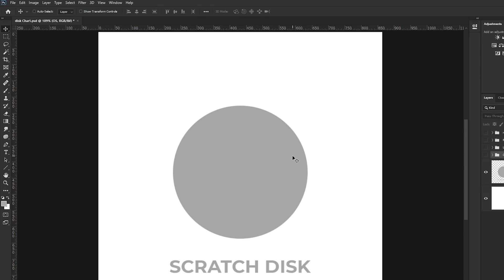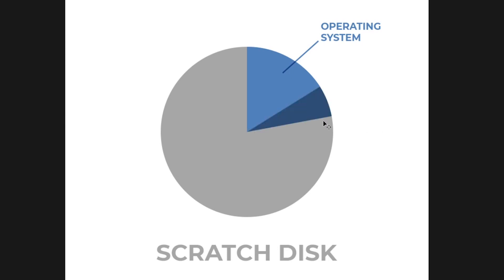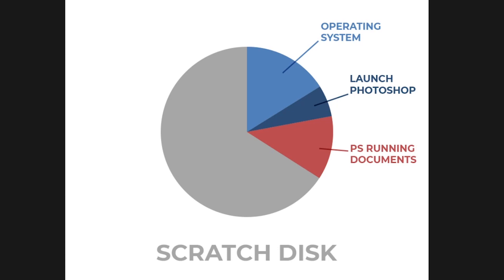Let me show you this chart here to explain what a scratch disk is and how it works. Let's suppose this is the primary drive where Photoshop is installed — we call it the scratch disk. When you install your operating system it takes some space in your hard drive or SSD. Then once you launch Photoshop, it takes up this much space — even before you've opened any document. Once you create a new document or open an existing PSD file, that takes away this much more space, which we call the Photoshop running documents. So you can see this much space has already been taken in the hard drive even before editing any documents.